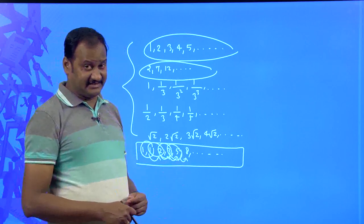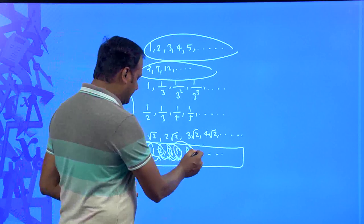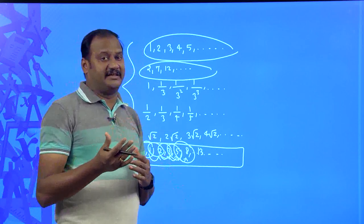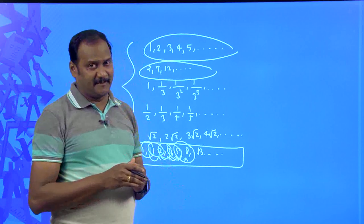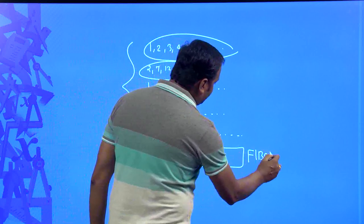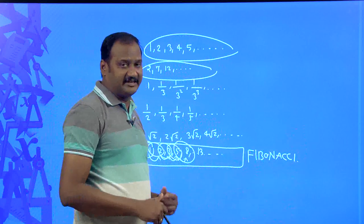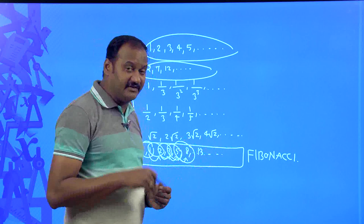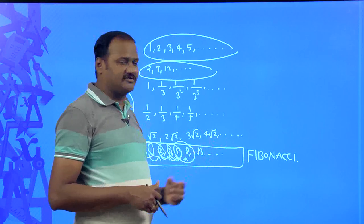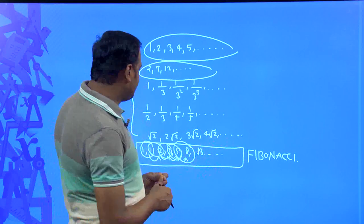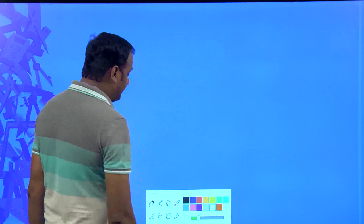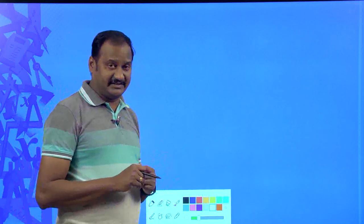We can identify that the next number in the sequence is 13. When you are given the first two numbers, the next number is the sum of the preceding two numbers. This kind of sequence is particularly named the Fibonacci sequence — a sequence in which each term is obtained by adding the preceding two numbers. This is out of curiosity; now coming to the point, we are going to discuss a special sequence called a progression.